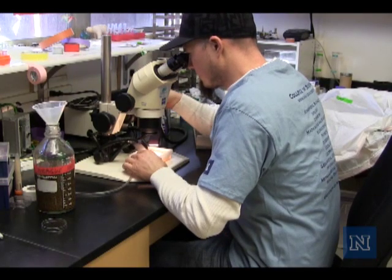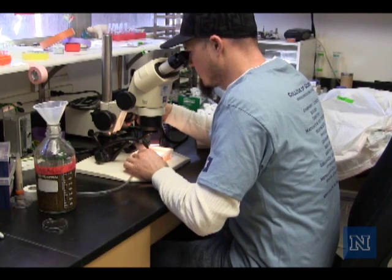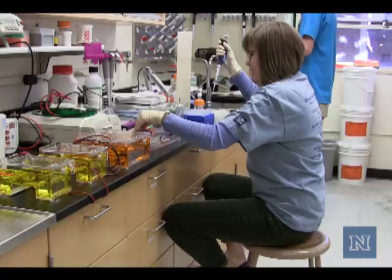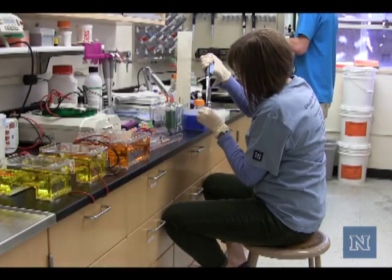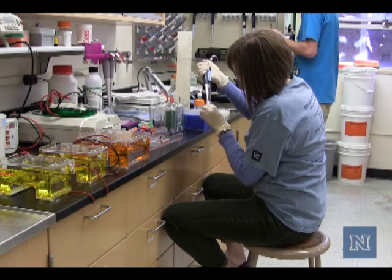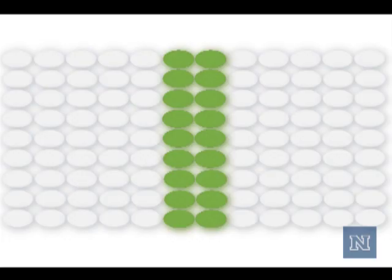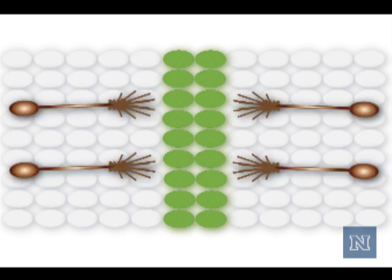My lab works on axon guidance in the fruit fly Drosophila. In particular, we've been working on the well-known axon guidance cues, the netrins. Fruit flies have two of these, netrin A and netrin B, and they're expressed at the CNS midline. So they provide a localized source of positional information for growing axons, which are normally attracted to the midline.